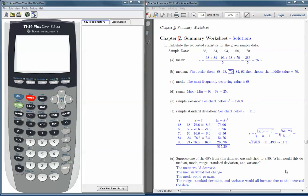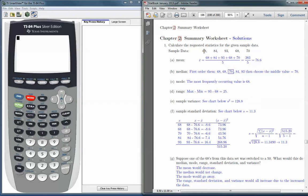For demonstration purposes, we will use the five numbers from the chapter 2 summary worksheet listed here. In this instance, I'm using the answers in the back of the book so that we can compare how the calculator does compared to our hand calculations.